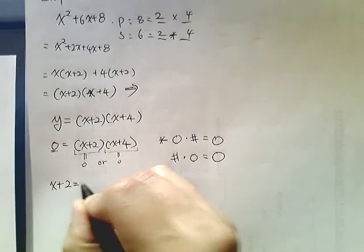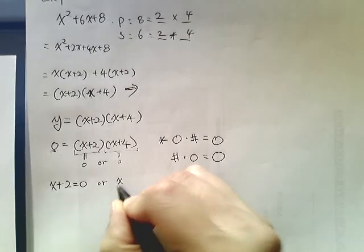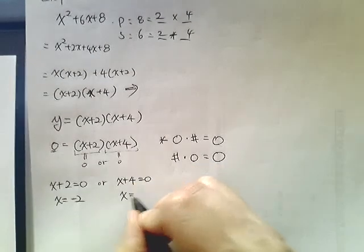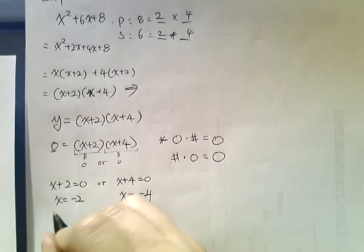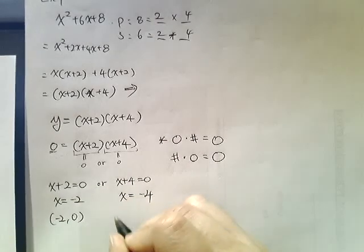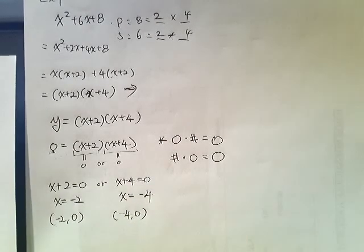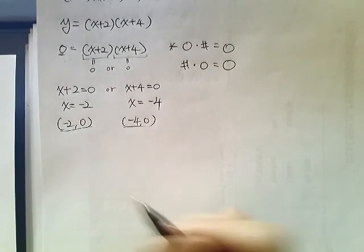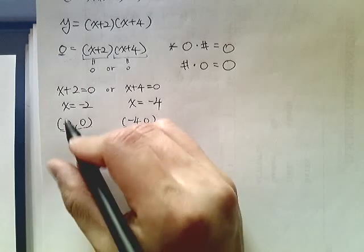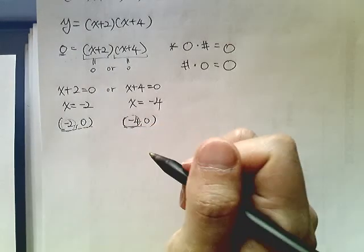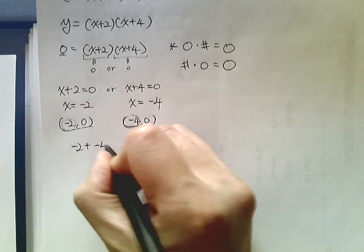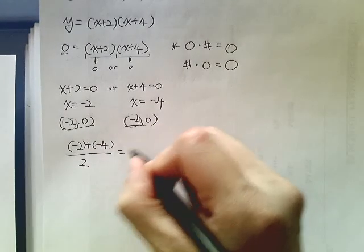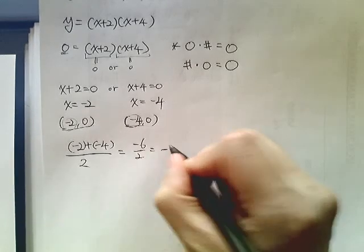So either x plus 2 equals 0 or x plus 4 equals 0. So then x equals negative 2, x equals negative 4. So the x-intercepts are negative 2, 0, negative 4, 0. So, once we have the x-intercepts, all we need to do is we just simply add the x-values of the x-intercepts. So, negative 2 plus negative 4 over 2 is then negative 6 over 2, which is negative 3.